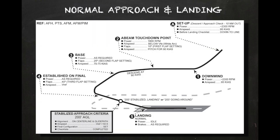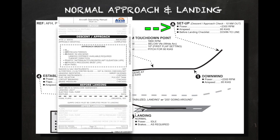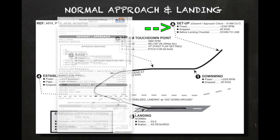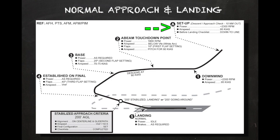Let's talk about the normal approach and landing profile and how we define a stabilized approach. Then we'll hop in the airplane and see an example of the maneuver start to finish. The preparation for the approach actually begins well away from the airport — about 10 miles prior, the pilot should have completed the before-landing checklist down to the line and conducted a thorough brief of the approach.